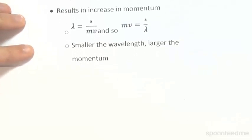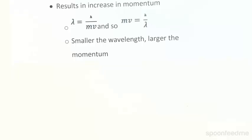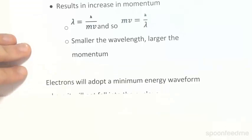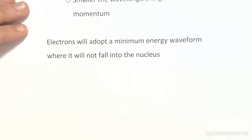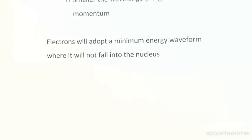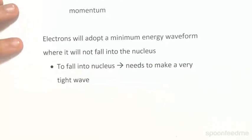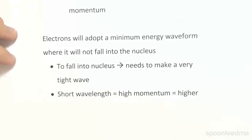The smaller the wavelength, the larger the overall momentum. So electrons will actually adopt a minimum energy waveform where they won't fall into the nucleus. If an electron were to fall into the nucleus, it would need to make a really tight wave with a really short wavelength, and the shorter the wavelength, the higher the momentum and thus the higher the kinetic energy.